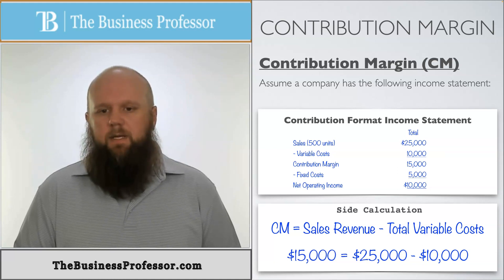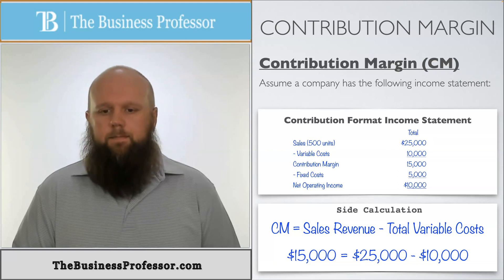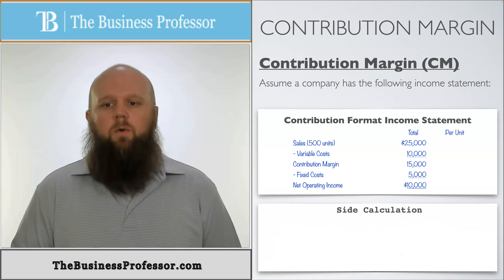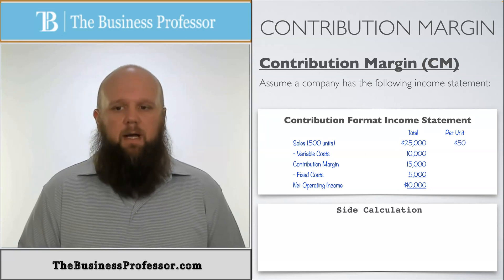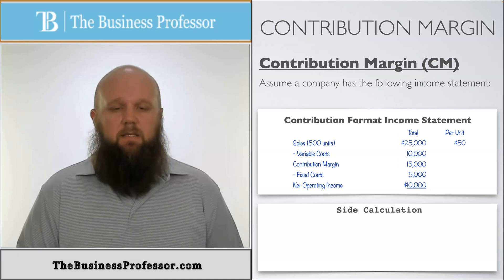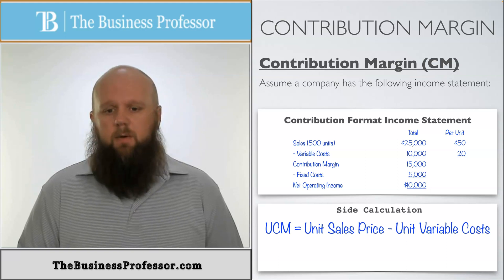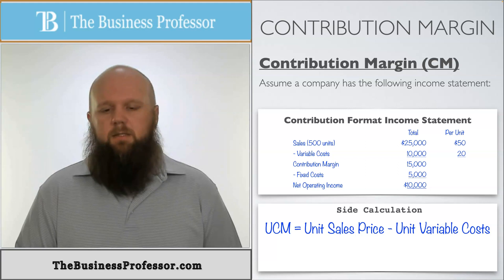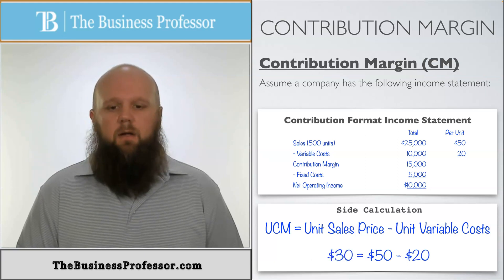Now let's look at the per-unit format. We're given that 500 units were sold. Dividing total sales of $25,000 by 500 units gives a unit sales price of $50. Dividing variable cost of $10,000 by 500 units gives a unit variable cost of $20. Applying the formula: unit contribution margin equals $50 minus $20, giving us a $30 unit contribution margin.